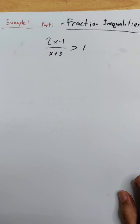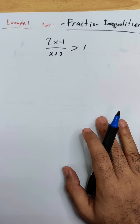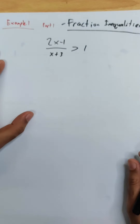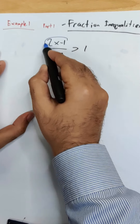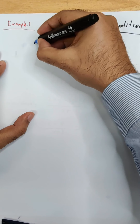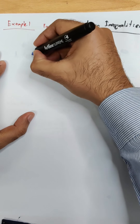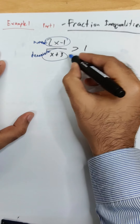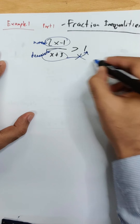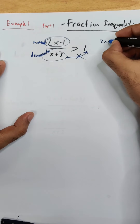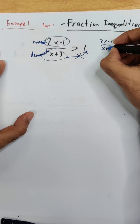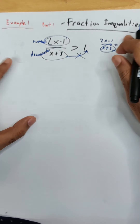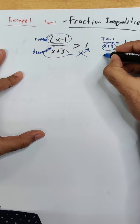Let's try this topic which I call fraction inequalities — for me personally, this is one of the hardest topics and the working steps are very long. In the most basic form of question, you have x in the numerator and x as your denominator. For this particular type of question you cannot cross multiply, unlike when it's an equation.